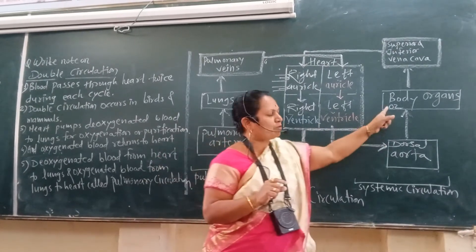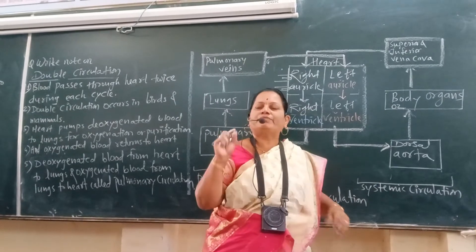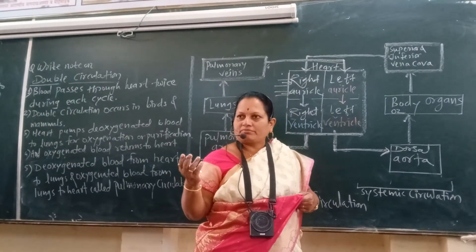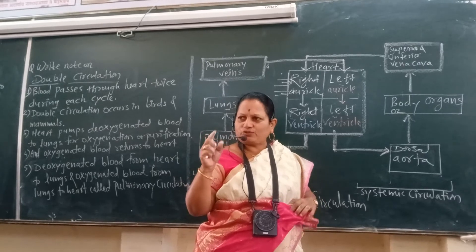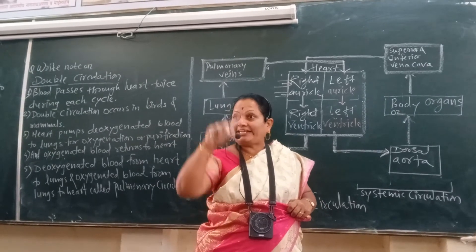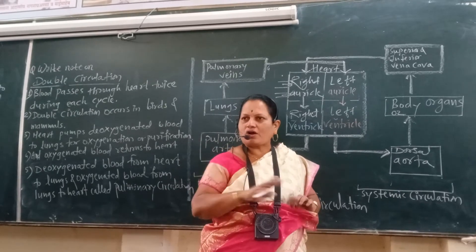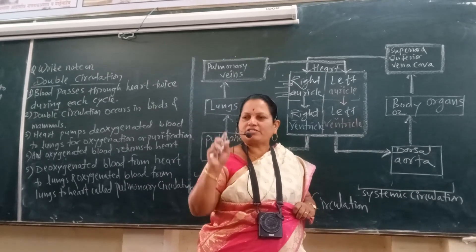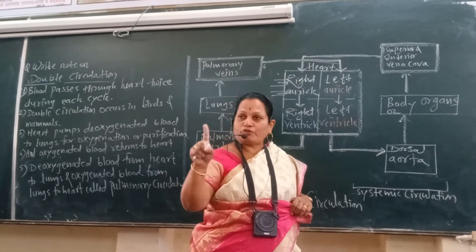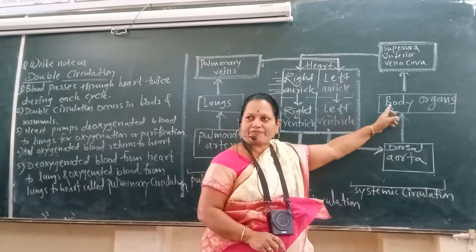From the left ventricle, oxygenated blood goes towards the body organs. Each and every cell of the body receives oxygenated blood, and that oxygen is used by the cell to produce energy in the form of ATP. That ATP is used by the cell for growth, cell division, and all cellular activities. ATP is produced by using food and oxygen.